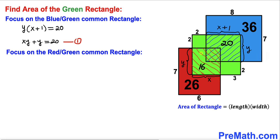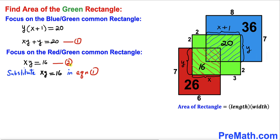Now let's focus on the red-green common rectangle. Using the area formula again, length times width gives us x times y, which equals 16. Let's call this Equation 2. Now let's plug this xy value of 16 into Equation 1.